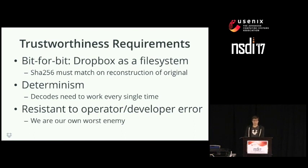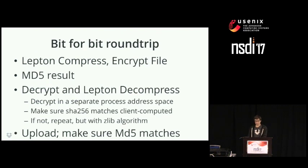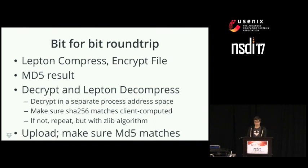Dropbox is a file system, and keeping user data safe is our top priority. Lepton absolutely has to accurately and correctly represent the files — it needs to be sufficiently deterministic to return the same bitstream each time, and it needs strong resistance to our own worst enemy: ourselves. For each image, we compress it with Lepton, encrypt it, and MD5 the result, still in memory before it's persisted. We then decrypt it, decompress it in a separate process, and make sure the SHA-256 sum matches the one the client computed when it sent us the file. If anything goes wrong or the decode times out after a second, we record an error and repeat the process with Zlib.